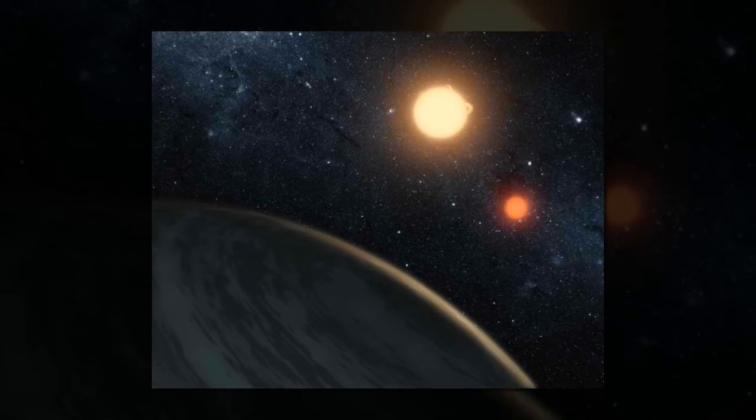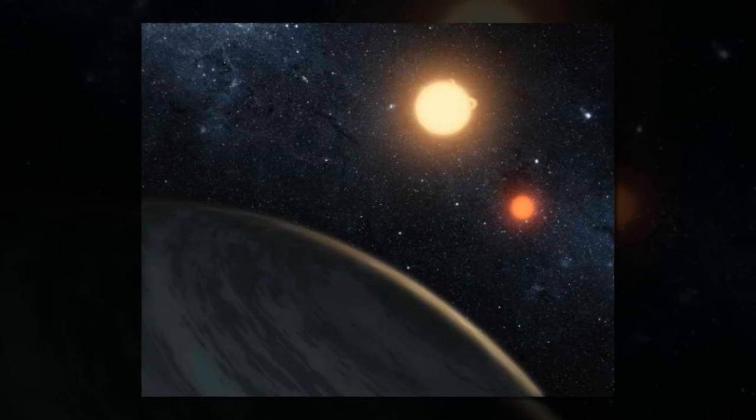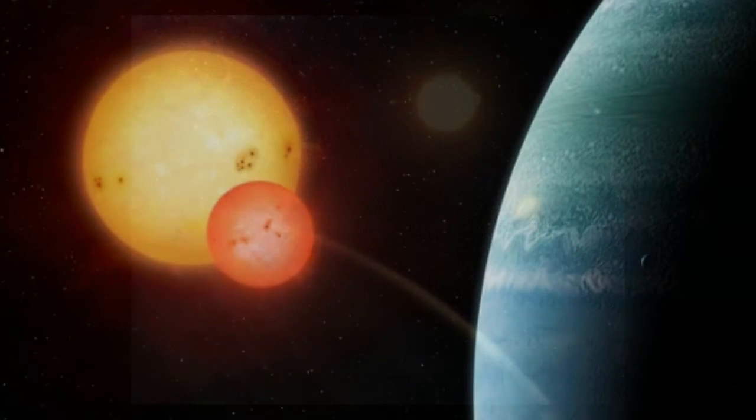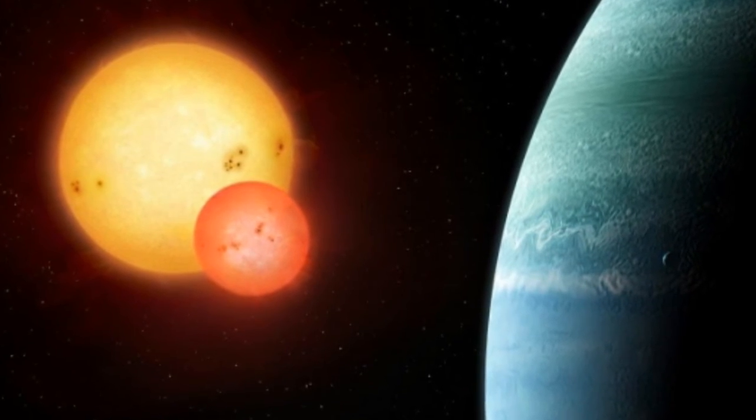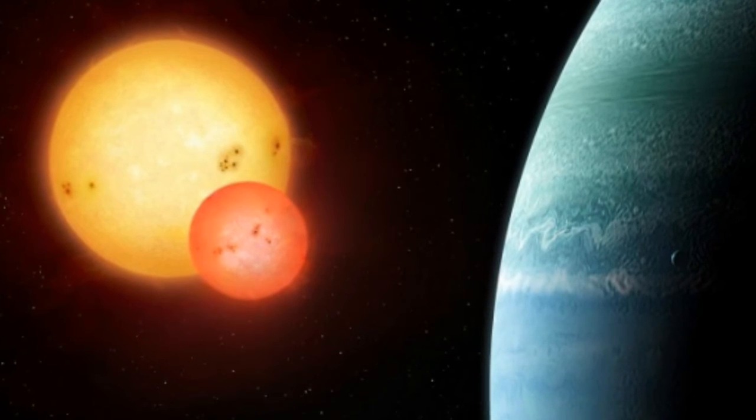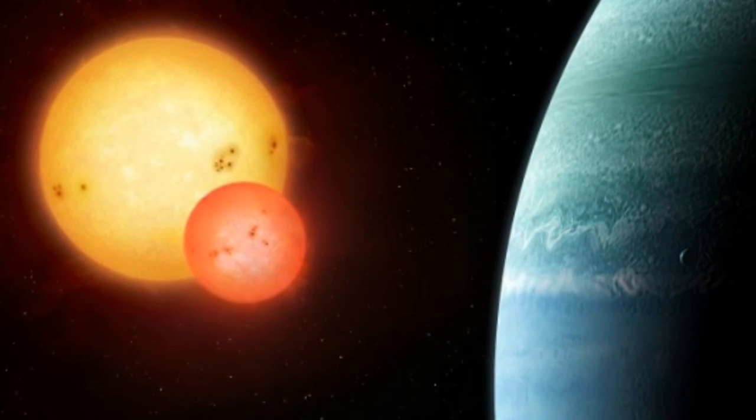During the planet's transit, it blocked 0.5 percent of the light from its host stars. This allowed researchers to find that the planet's radius is 6.2 times that of Earth. It is also about 60 percent larger than Neptune.